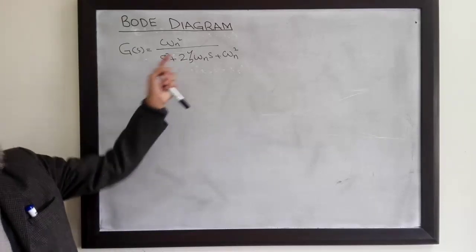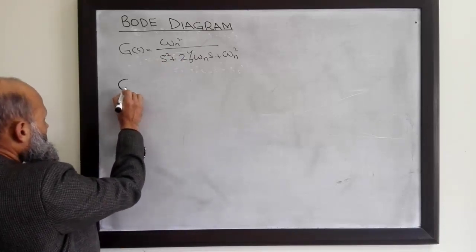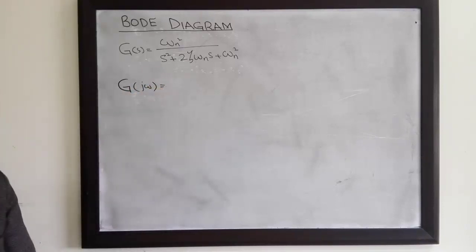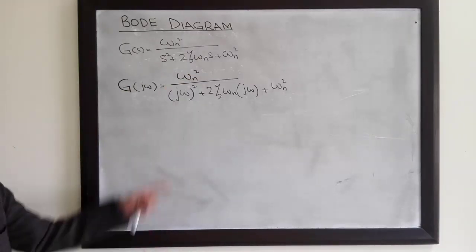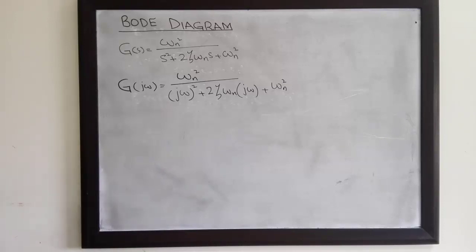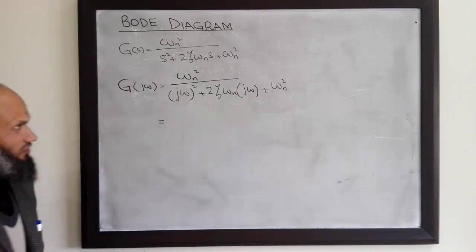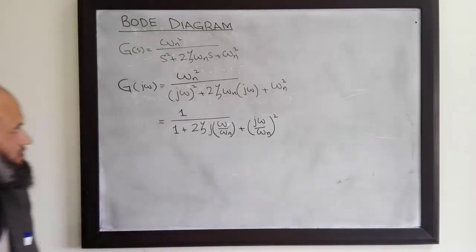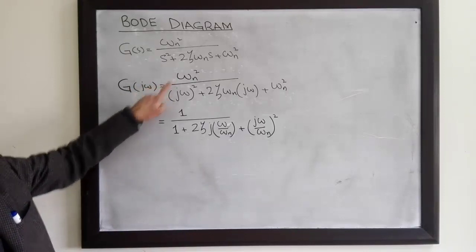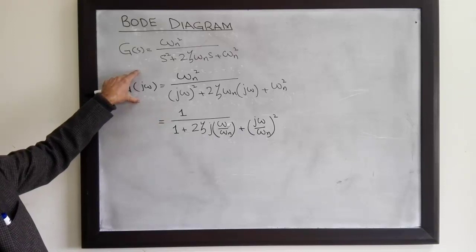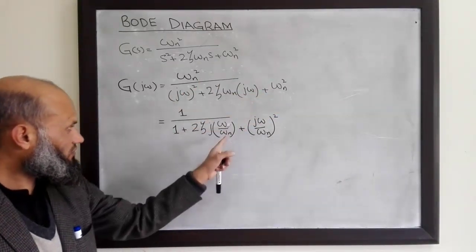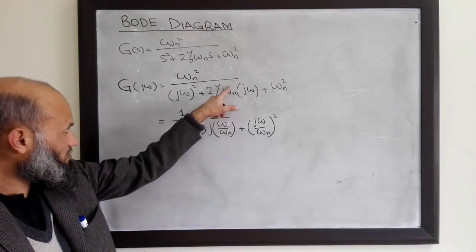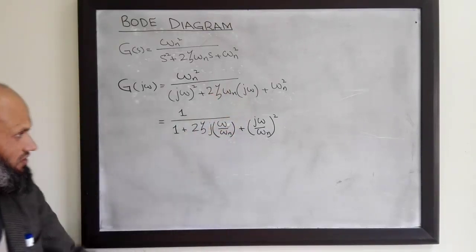The transfer function of a second order system is given by this expression. Its frequency response G(jω) is obtained by substituting s equal to jω into the transfer function. By substituting s equal to jω and taking ωn squared common from the numerator and denominator, this transfer function can be rewritten such that ωn squared divided by ωn squared is 1, giving us a simplified expression.